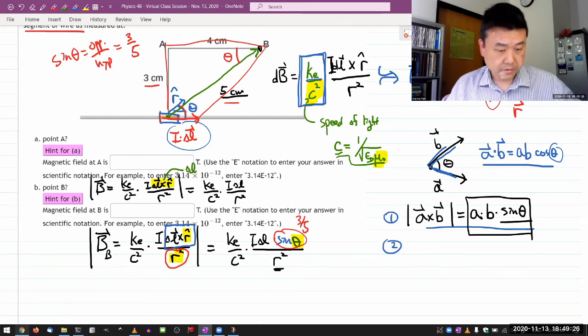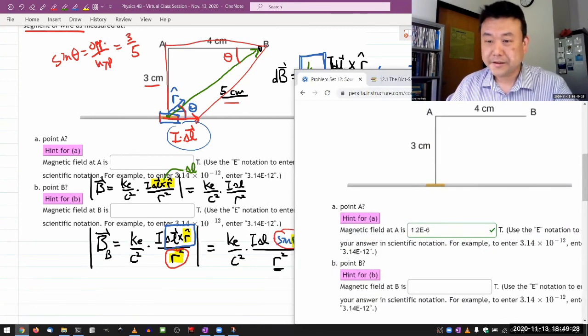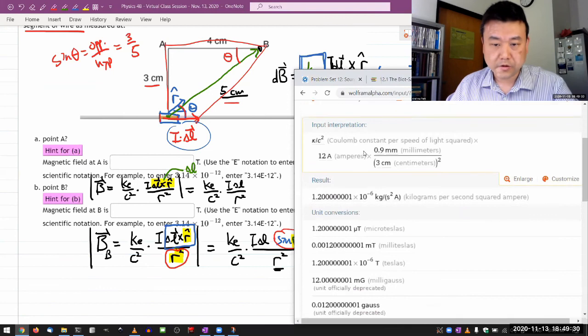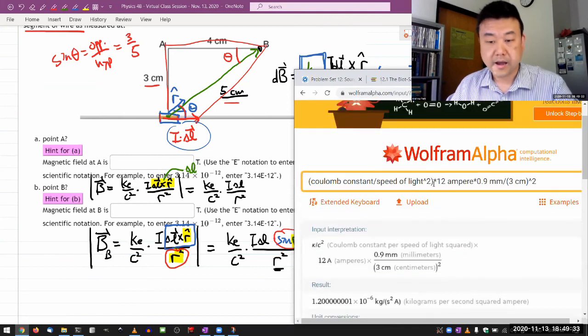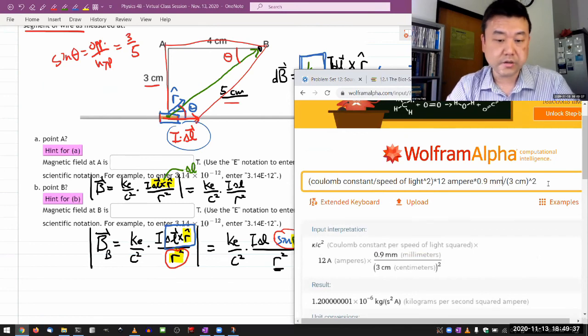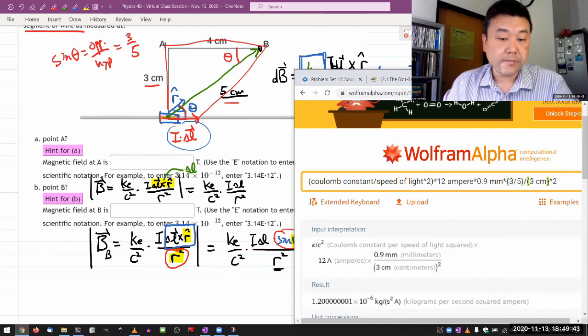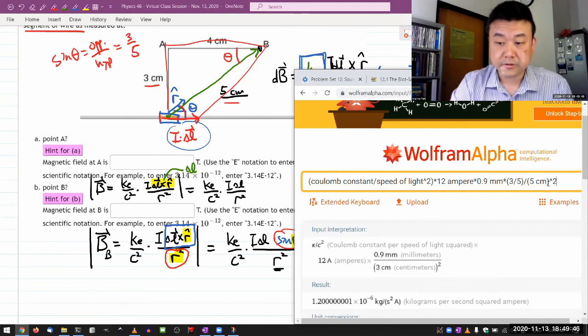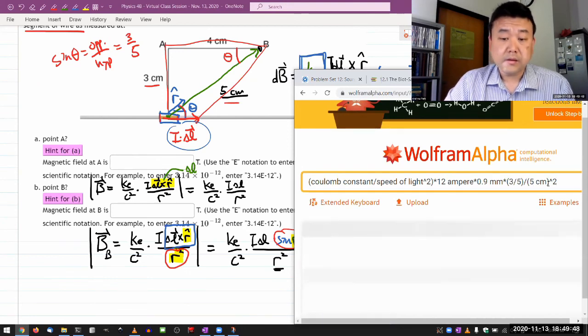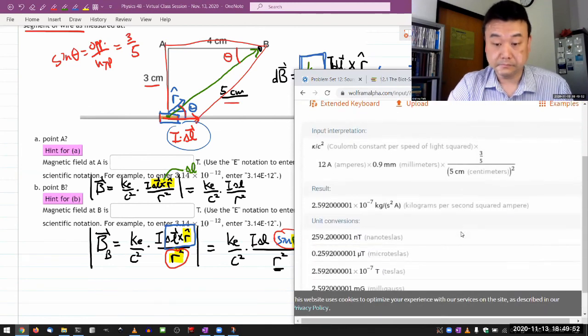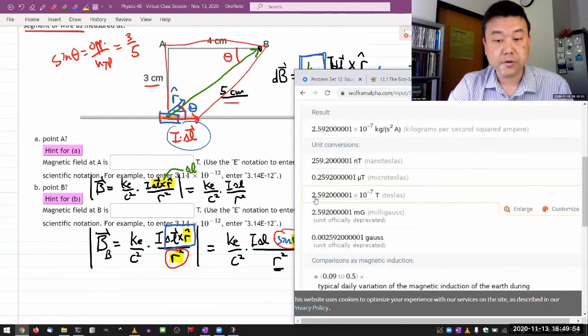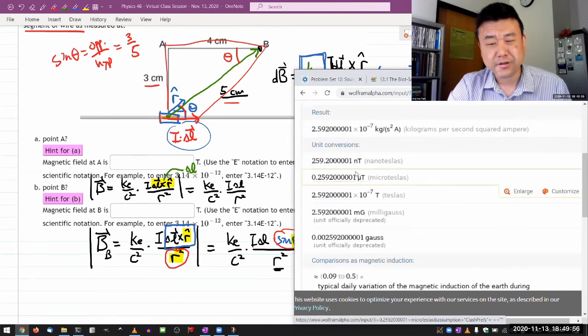Let me plug in those other numbers. It's the same coefficient as before, Coulomb constant over c squared times same current, same length. Now what's changed is I have the sine θ, which works out to be three over five here, divided by now the distance also changes, five centimeters. When you do all that you get 2.59 times 10 to the minus seven.